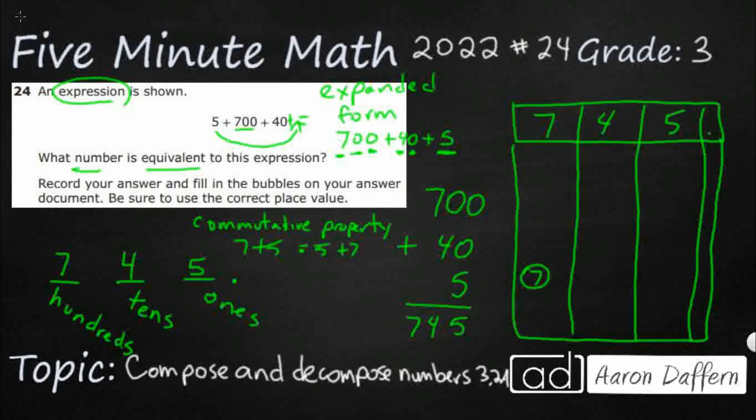Then you need to find the correct digits underneath: the 7, the 4, and the 5. Make sure you bubble them in completely. Don't leave any blanks. Do not color outside of the circle. And that is your answer.